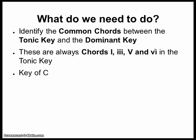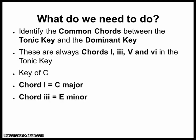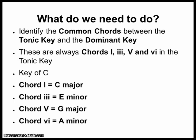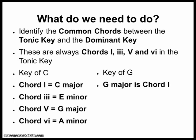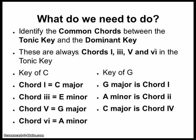In the key of C, for example, chord I is C major, chord III is E minor, chord V is G major, and chord VI is A minor. These chords are also in the key of G, just with different numbers. G major is chord I, A minor is chord II, C major is chord IV, and E minor is chord VI.